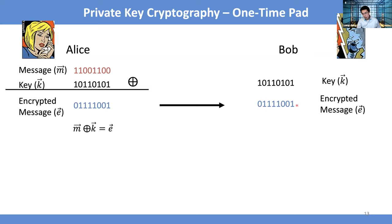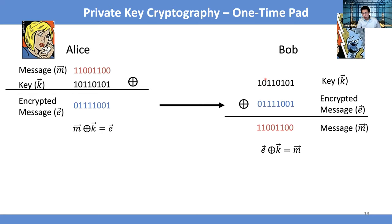Bob gets the encrypted message and performs another XOR — a bitwise binary sum — between his secret key and the encrypted message. The original message is then restored. This is a way to restore the message without letting the environment know the true message. It uses the property that performing a binary sum with the same key twice does nothing — it restores the original message.